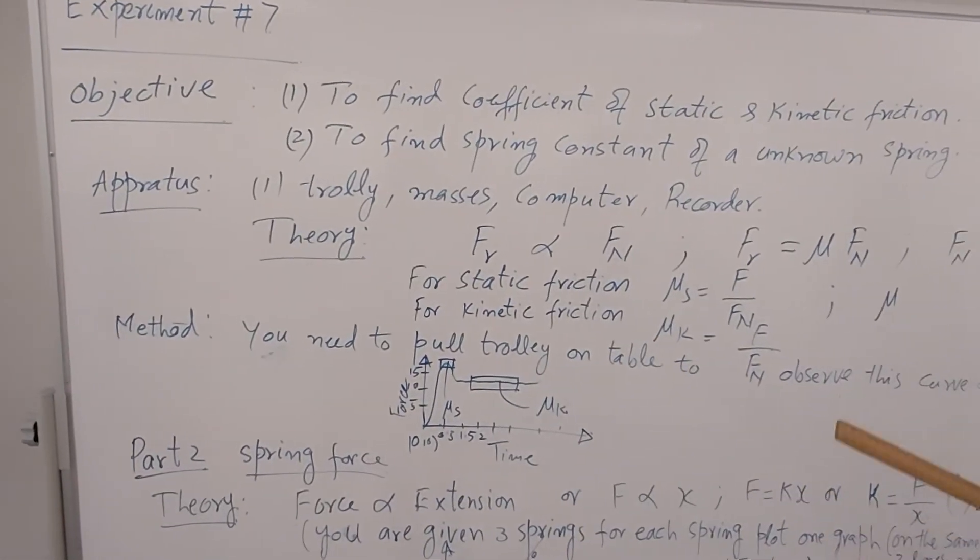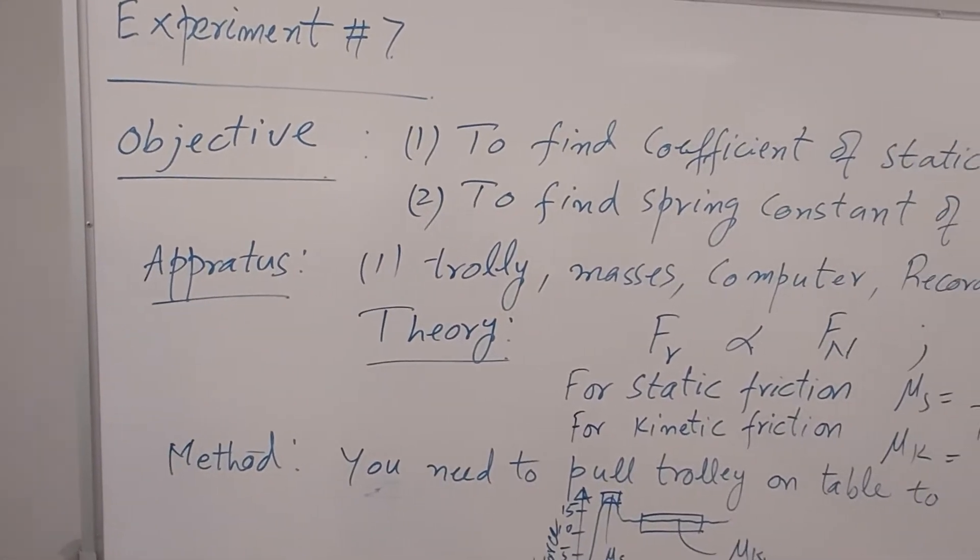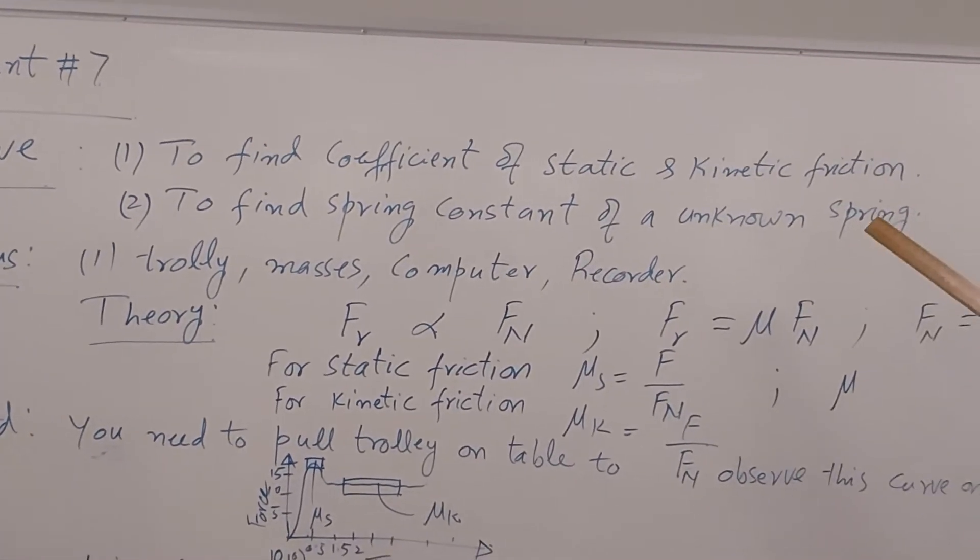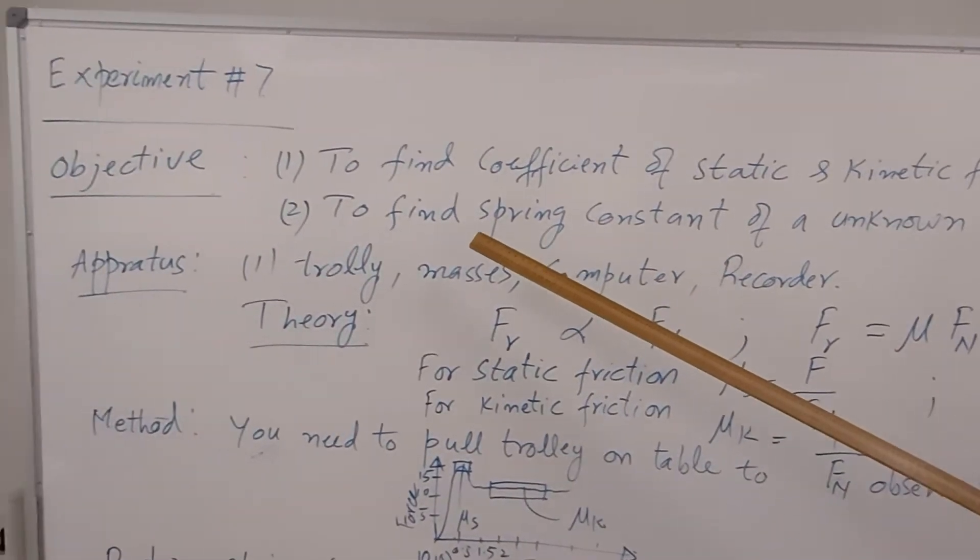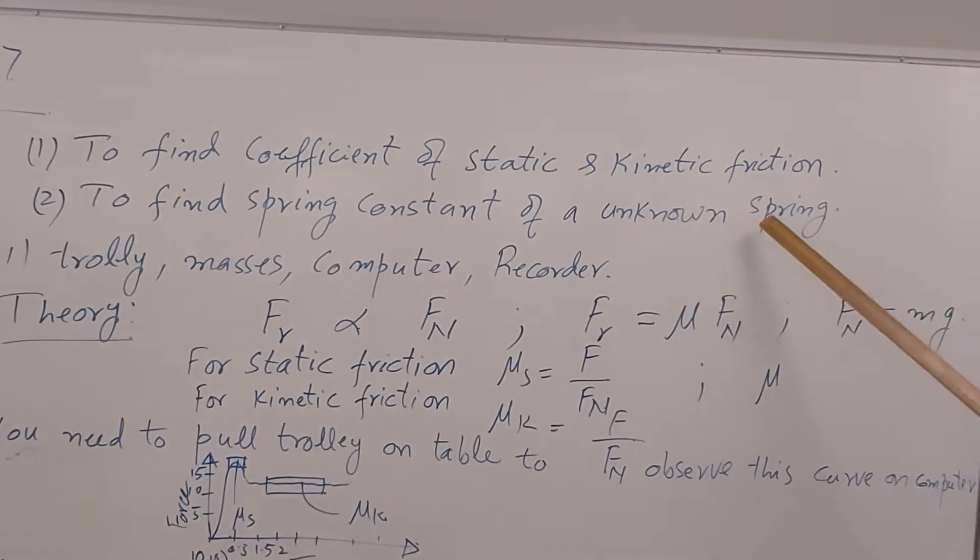This is experiment number 7 and the objective is to find coefficient of static and kinetic friction. Actually we have two experiments. The second part is to find spring constant of an unknown spring.